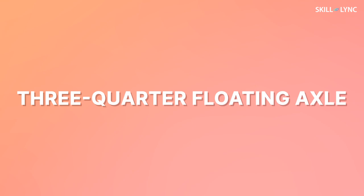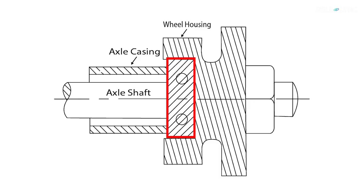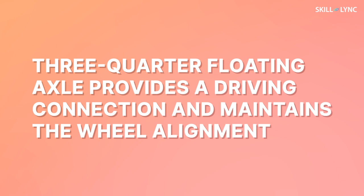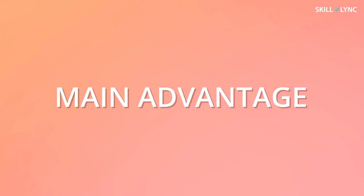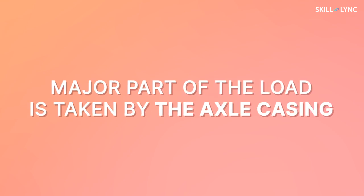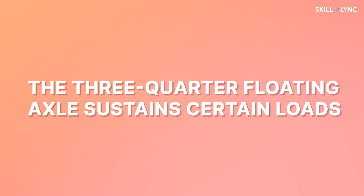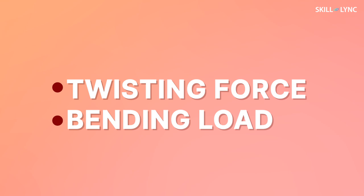The next type is the three-quarter floating axle. In this type, a single bearing is placed in the center of the wheel hub. The wheels are fixed to the end of the axle with the help of a key, bolt, or nut. This provides a driving connection and maintains the wheel alignment. Here, the weight of the vehicle is partly supported by the axle and the axle casing. The main advantage of this type over the semi-floating axle is that the major part of the load is taken by the axle casing. The three-quarter floating axle sustains certain loads such as the twisting caused by driving and braking thrusts and the bending load caused by side thrust when the vehicle is cornering.